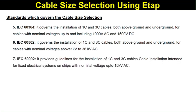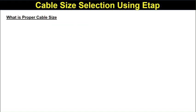IEC 60092 provides guidelines for the installation of single-core and three-core cables for fixed electrical systems on ships, with nominal voltage up to 15 kV AC. Now, what is the proper size of a cable?